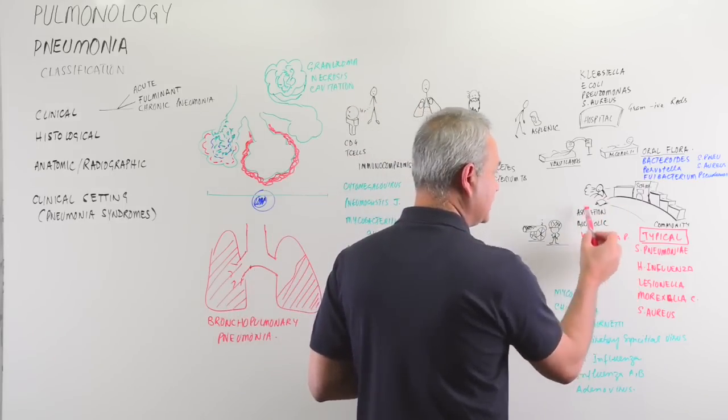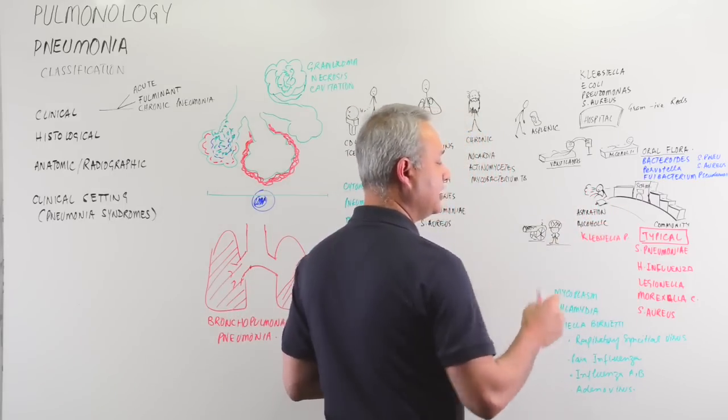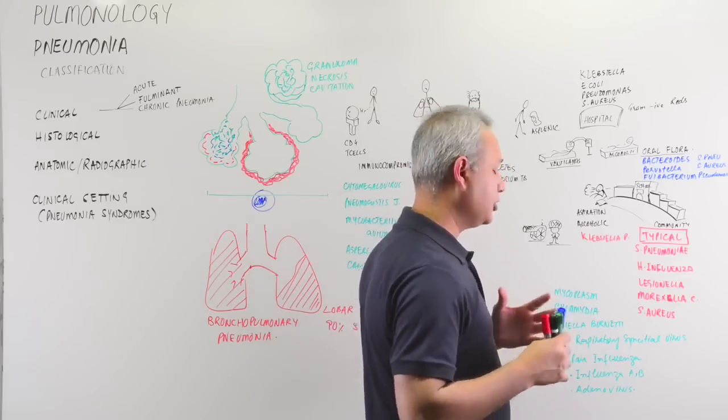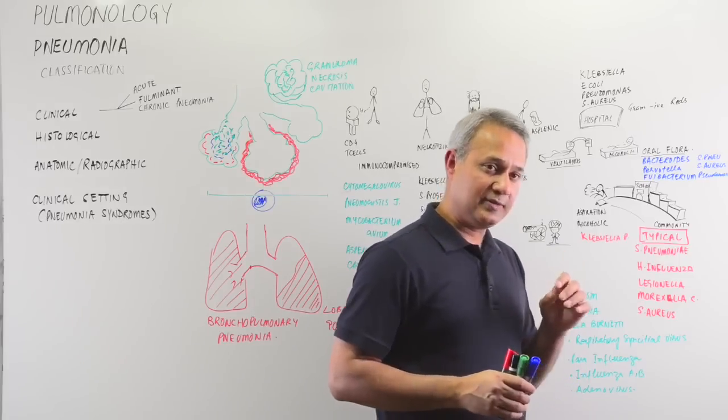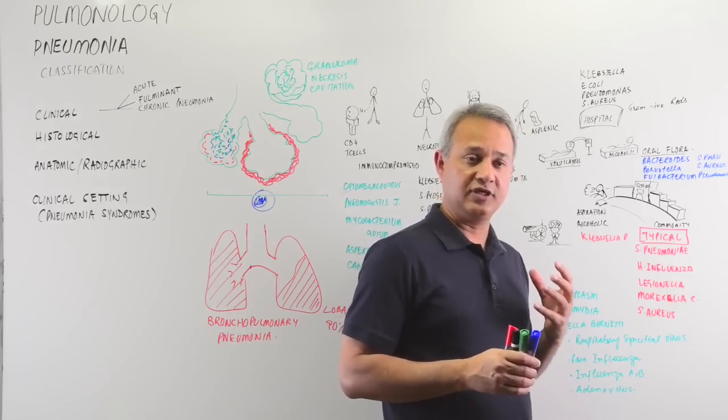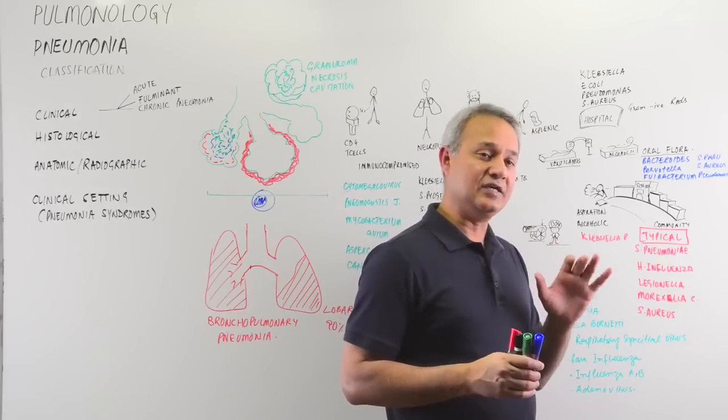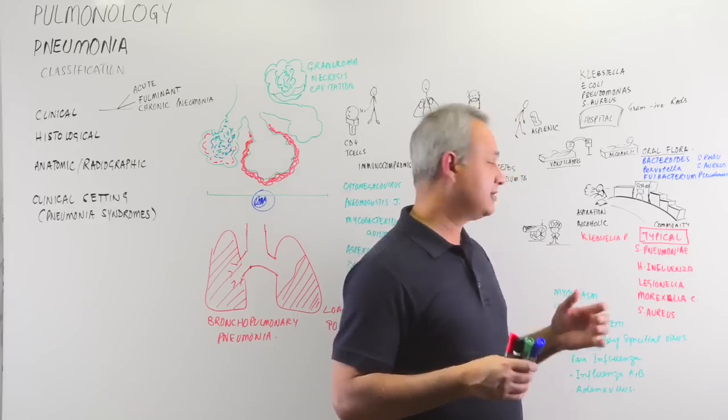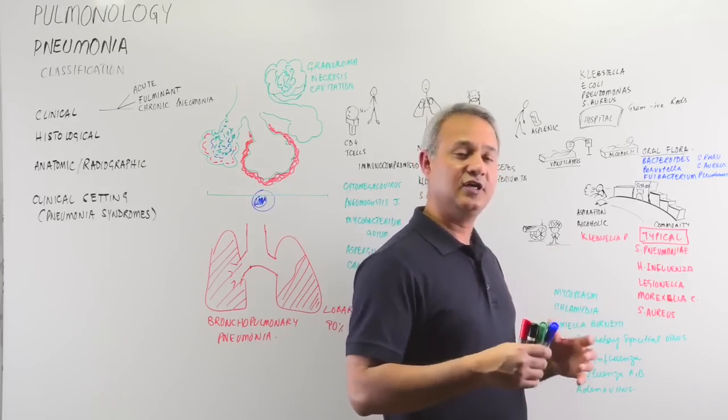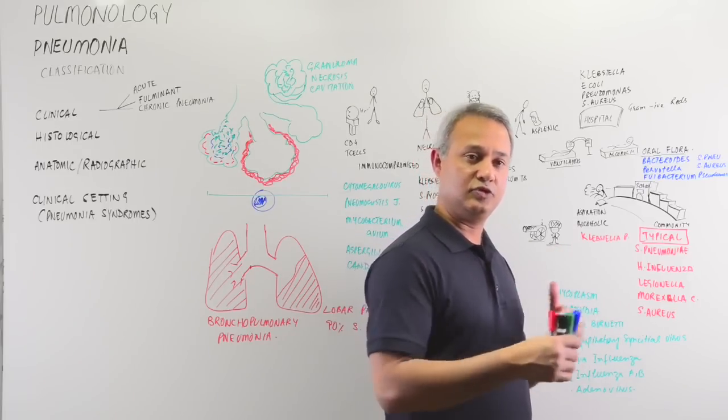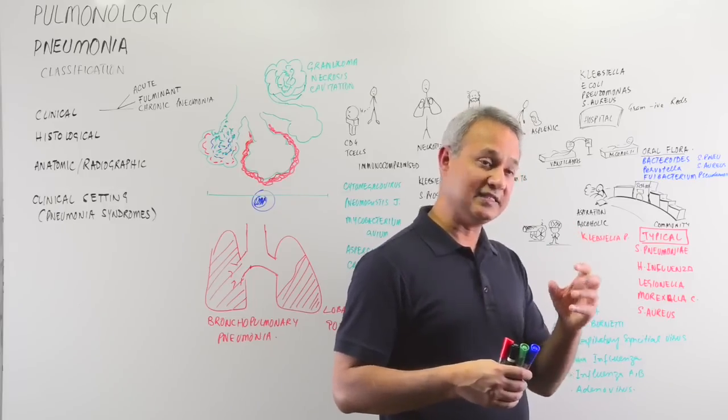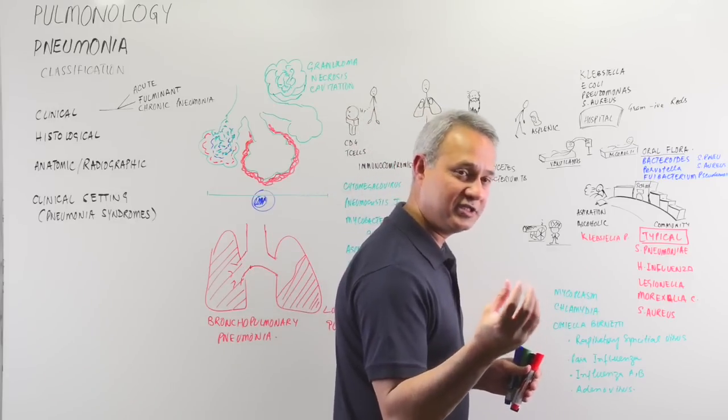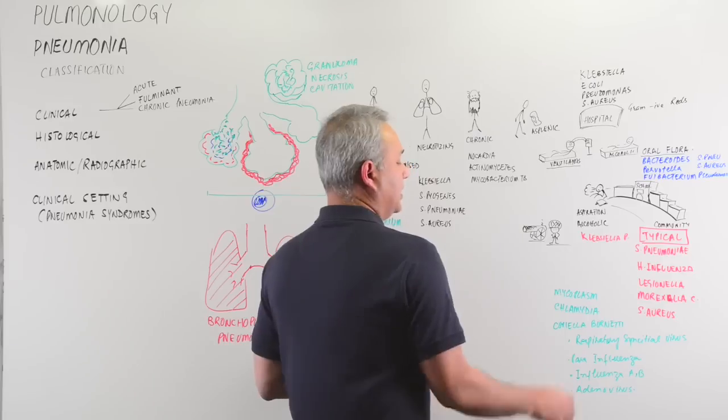Another thing in community acquired: alcoholics can develop Klebsiella pneumonia more commonly. How do you figure that out? The patient when he comes in would have red currant jelly-like sputum, so very thick jelly-like sputum. The reason for that is Klebsiella produces a lot of viscid capsular secretions which look like jelly. Red currant jelly is the verbiage, the words that will be used in your question.